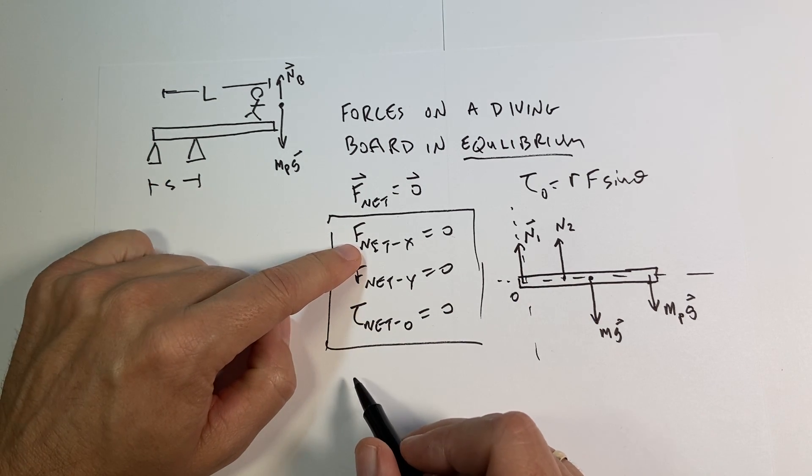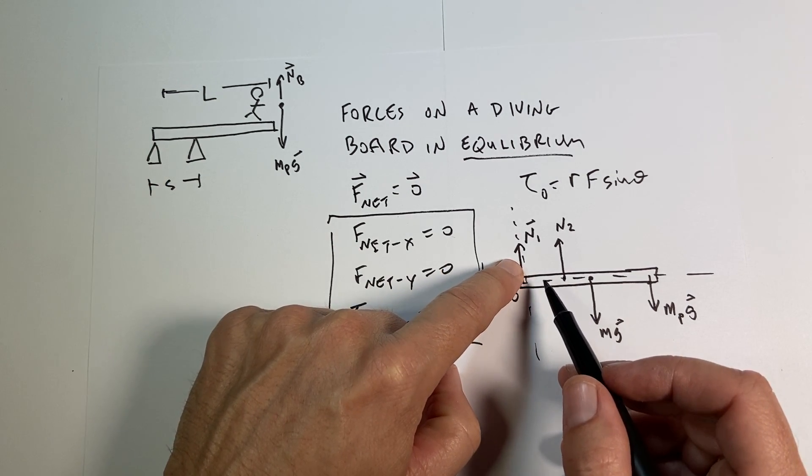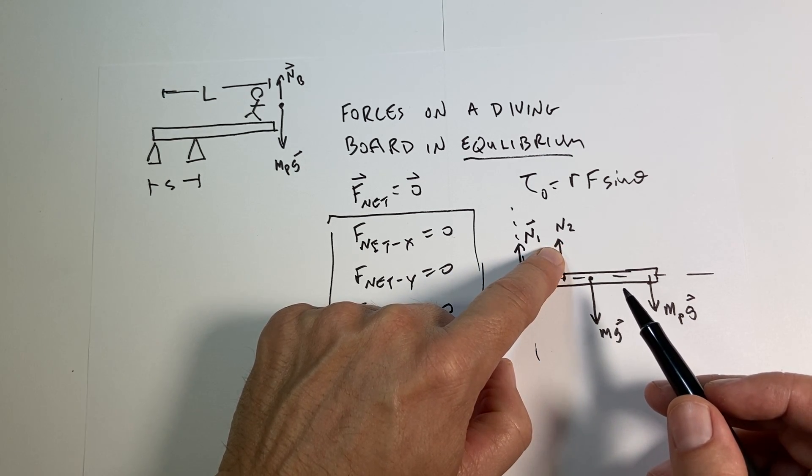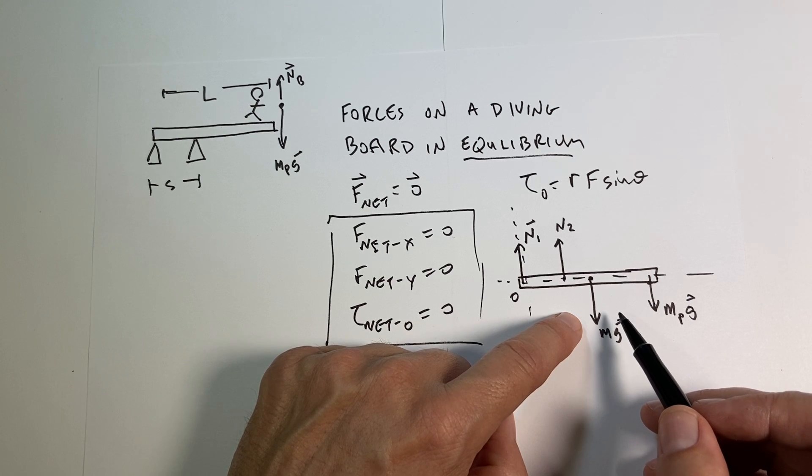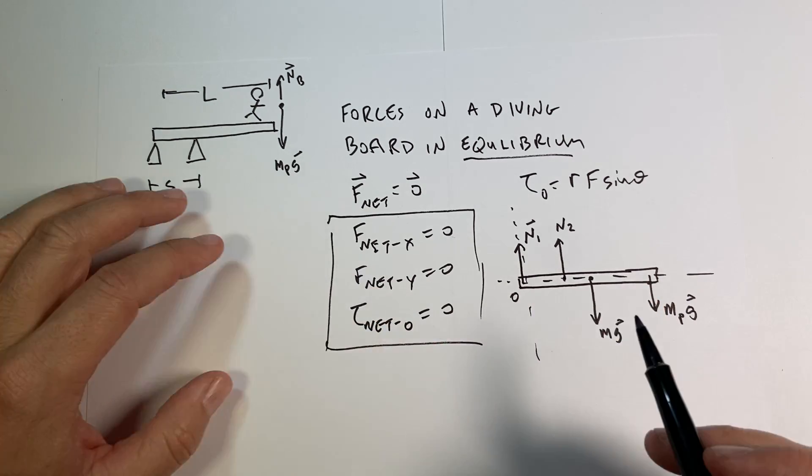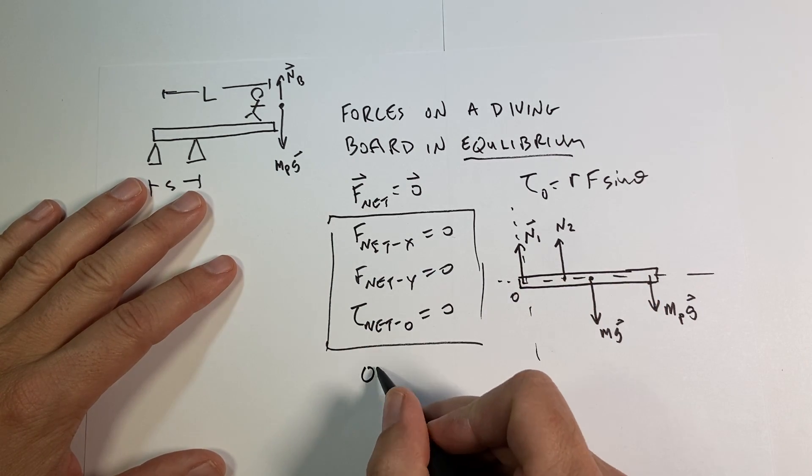So now I can write down these equations using my forces right here. So let's write down the net force in the X direction. How much does that point in the X direction? It doesn't. How much does that point in the X direction? It doesn't. How much does that one point in the X direction? It doesn't. How much does that one? So this is just zero equals zero.